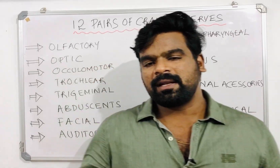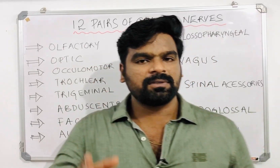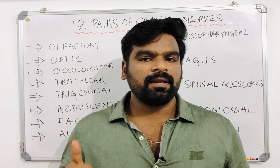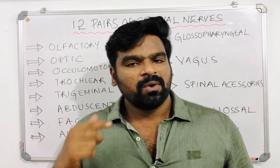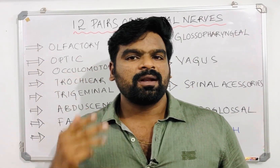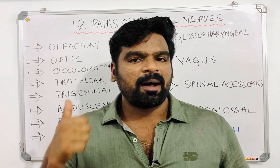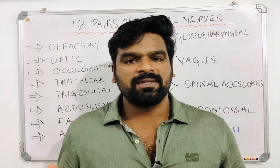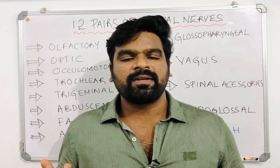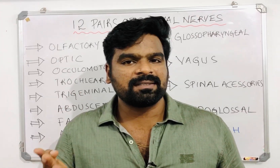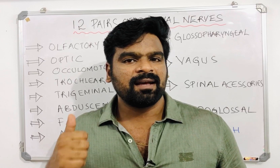There are 12 pairs of cranial nerves: olfactory, optic, oculomotor, trochlear, trigeminal, abducens, facial, auditory, glossopharyngeal, vagus, spinal accessory, and hypoglossal nerves.